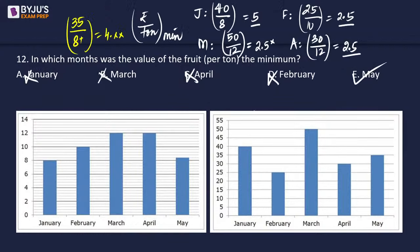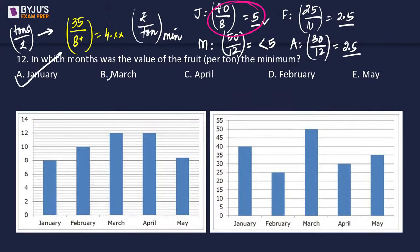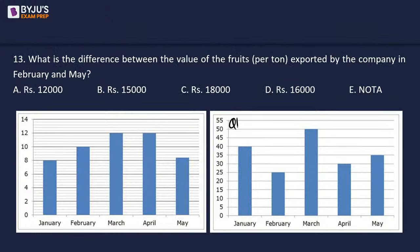In which month was the value of fruit per ton the minimum? We need to calculate rupees per ton for each month. Using the corrected graphs, the reciprocal analysis from our earlier calculation shows January had the largest tons-per-rupee ratio, meaning it has the smallest rupees-per-ton. So January is the answer for minimum value per ton.